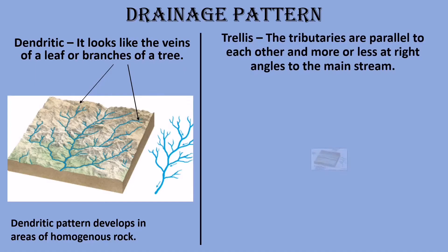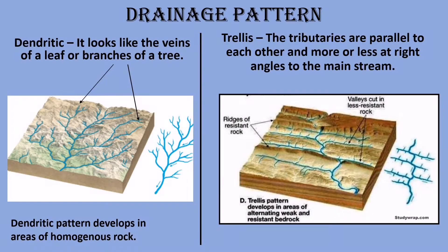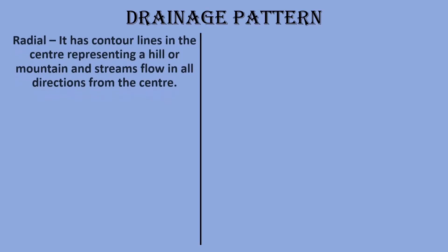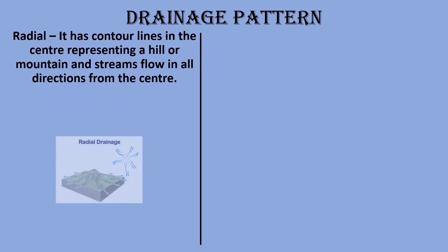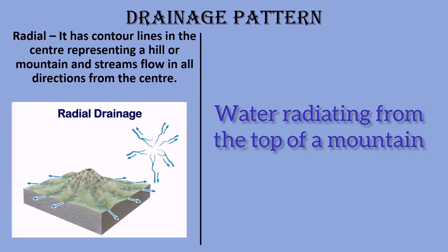Next pattern is trellis. It develops in areas of alternating weak and hard rocks. You can see that the tributaries are parallel to each other, and more or less these tributaries form right angles to the mainstream. Next, coming to radial — radial pattern usually has contour lines in the center to represent a hill or mountain. From the center, you can see the streams flowing in all directions downwards. A simple way to remember it: water radiating from the top of a hill or mountain is a radial pattern.